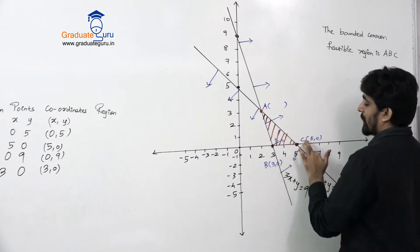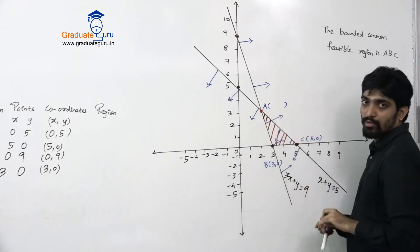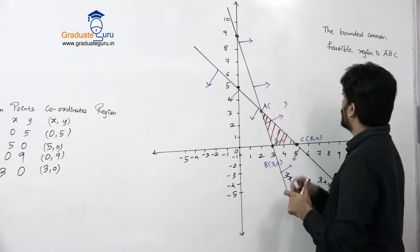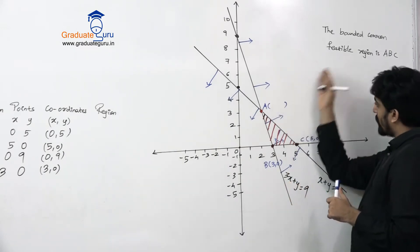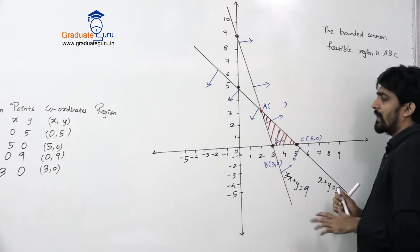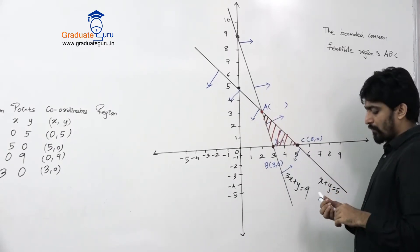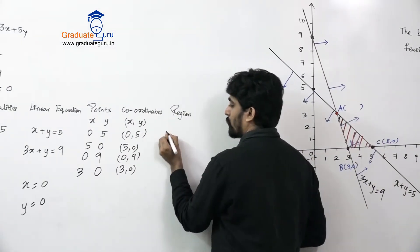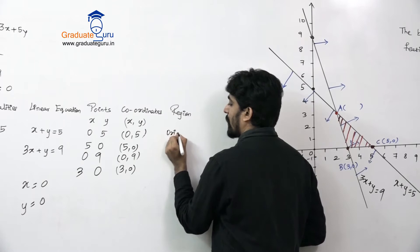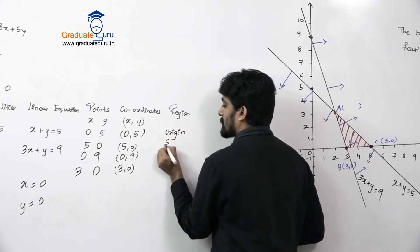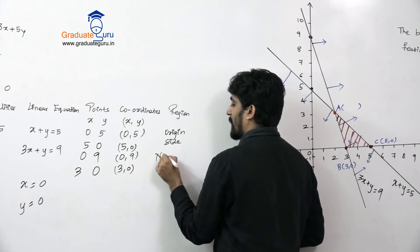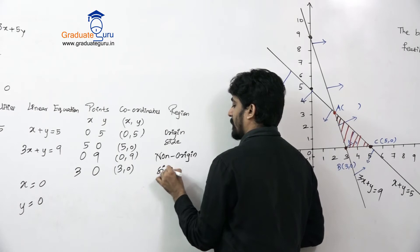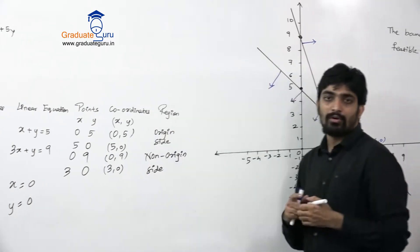The bounded common visible region is A, B, and C. Now let's define the coordinates. Point B and C are on the axes, so their coordinates are known: B is (3, 0) and C is (5, 0). For the region part, one condition is origin side and the other is non-origin side.